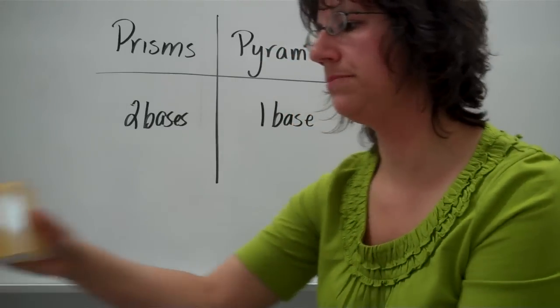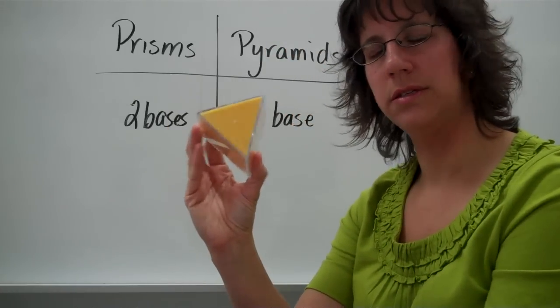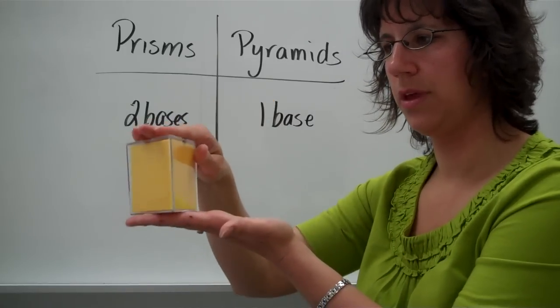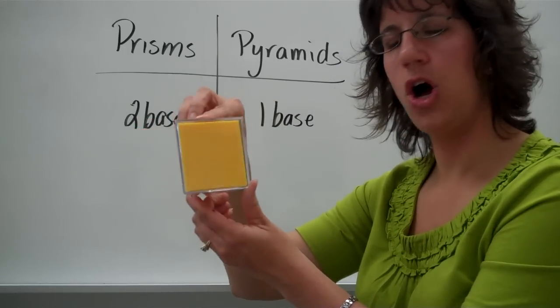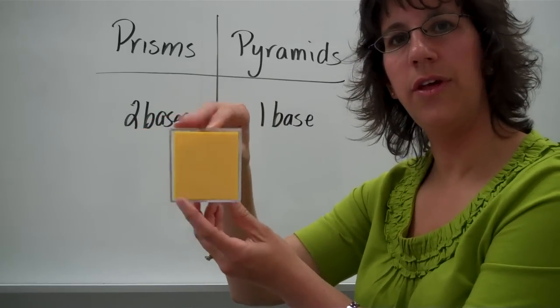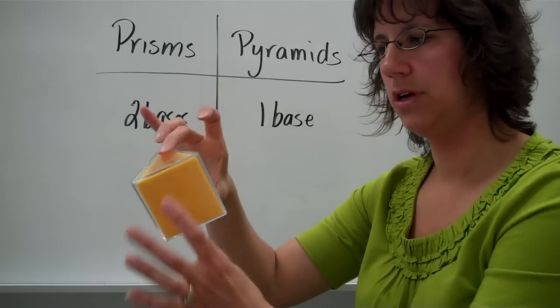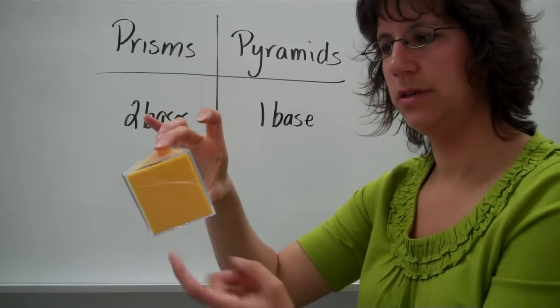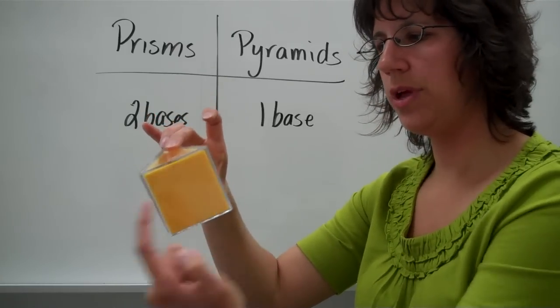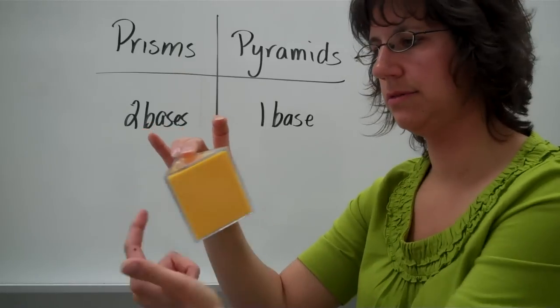A triangular prism will have a triangle base. A triangle on the top and the bottom, and then all the sides are rectangles. There are three rectangles. Triangle base, triangle base, three rectangular faces.